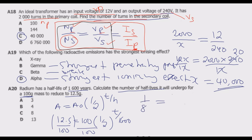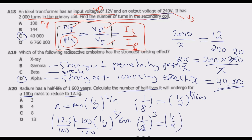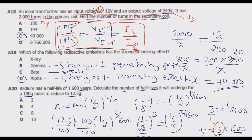Since 1/8 = (1/2)^3, we have (1/2)^3 = (1/2)^(T/1600). By the law of indices the powers are equal, so T/1600 = 3, meaning T = 3 × 1600 = 4,800. The number of half-lives is 4800 ÷ 1600 = 3. Option A is the correct answer. That is how you find this answer to get the optimal marks.